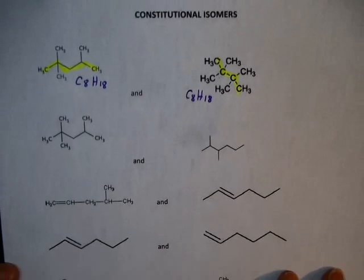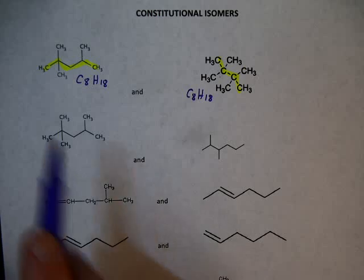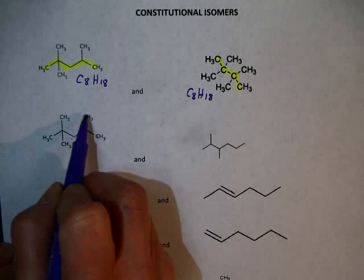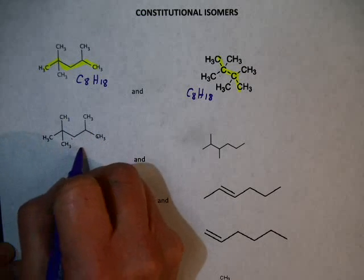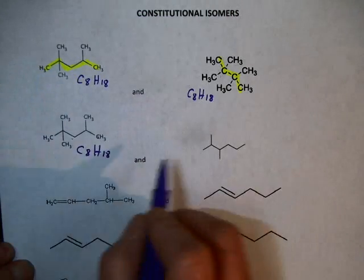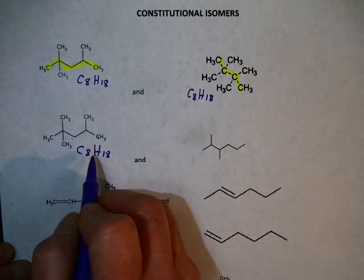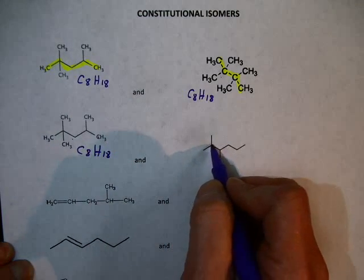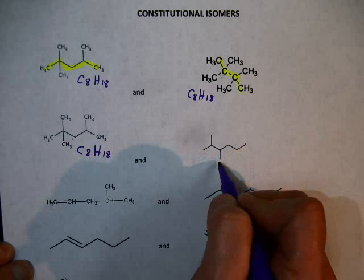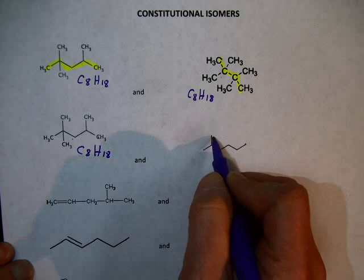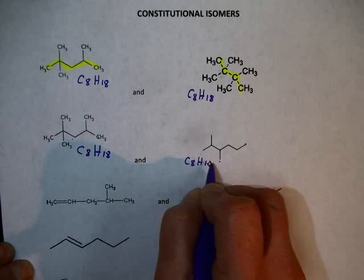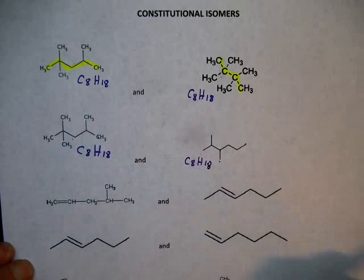How about the next example? Counting the carbons gives 8, making it C8H18 — the same compound as before. The other compound also has 8 carbons: C8H18.